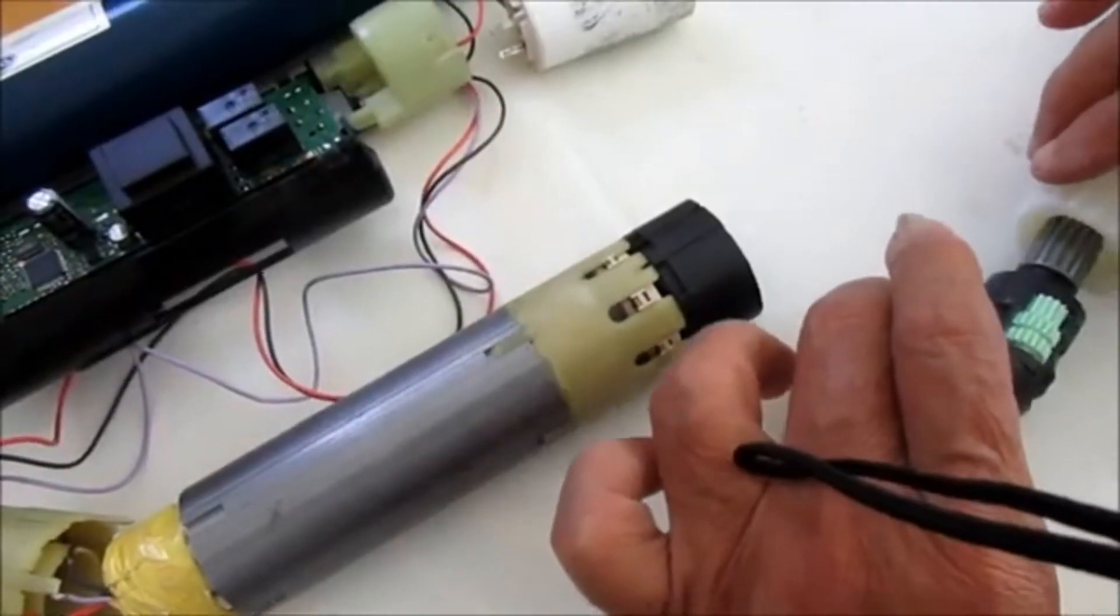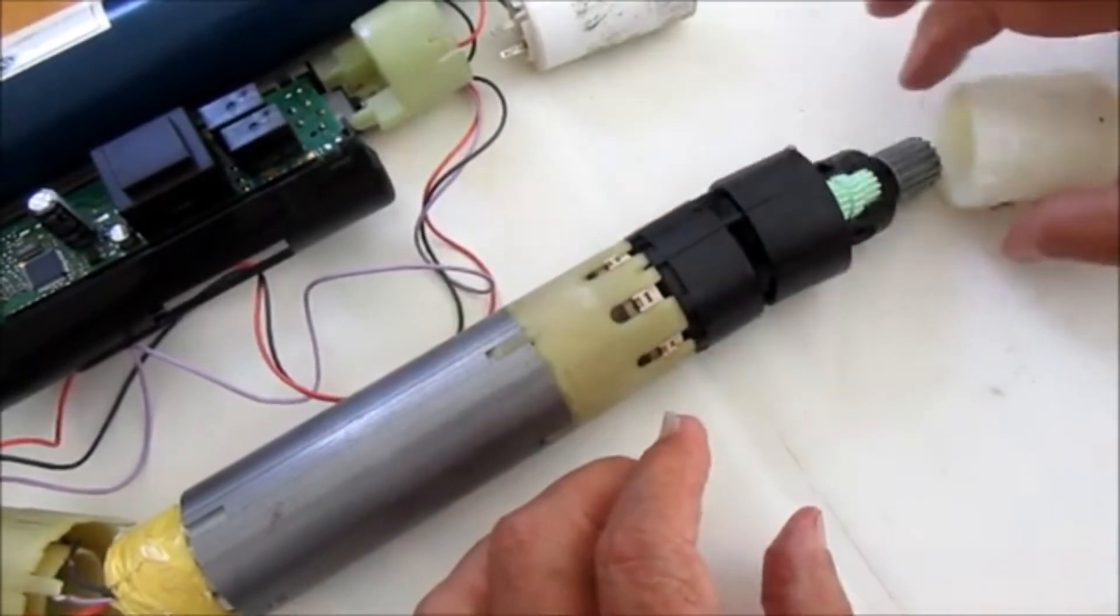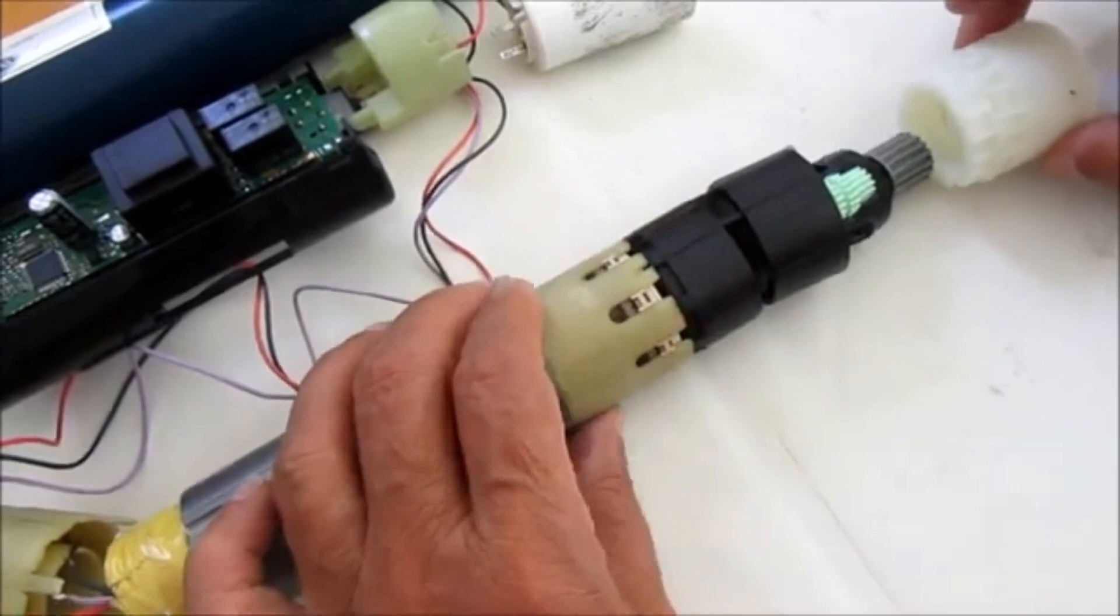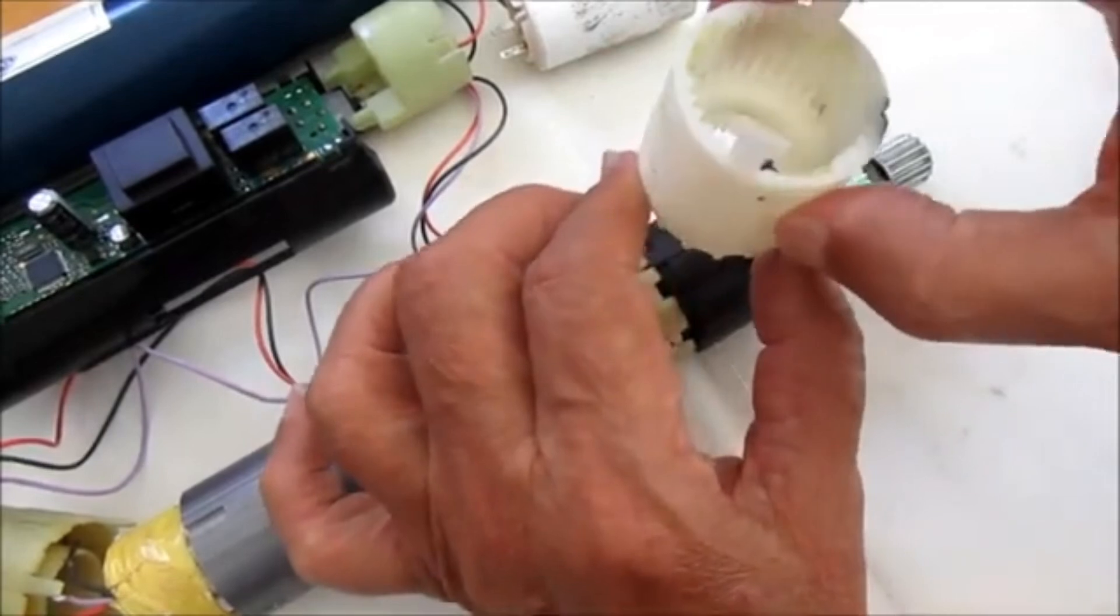Then you have a coupling, and here is the gearbox which reduces the RPM. There's another segment here which reduces it further with internal gears.